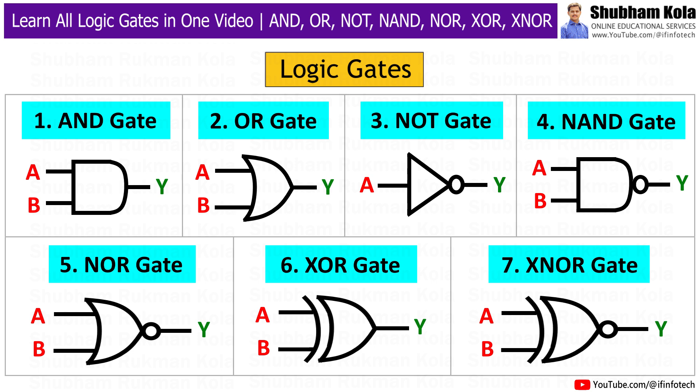So these are the 7 logic gates. Each gate has its own symbol, truth table, and logic function. These gates are very important in digital circuits and are used in microprocessors, computers, calculators, and many other electronic devices. If you liked this video, please like, share, and subscribe to our channel. Thank you for watching, and keep learning.